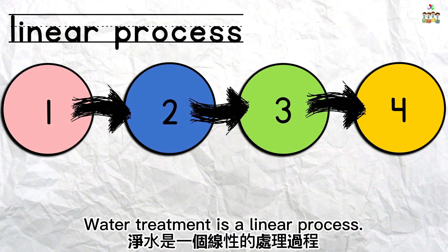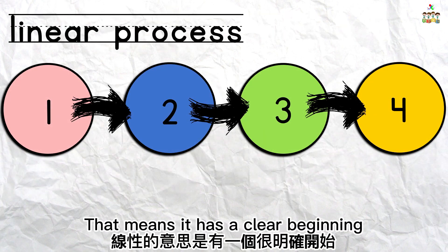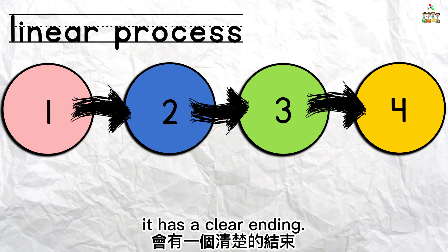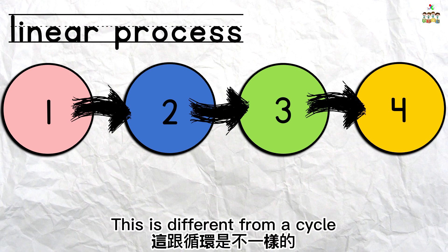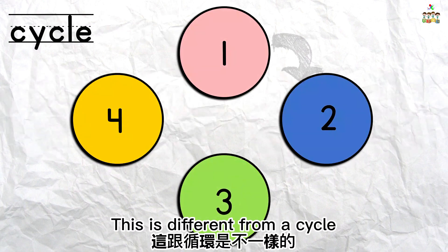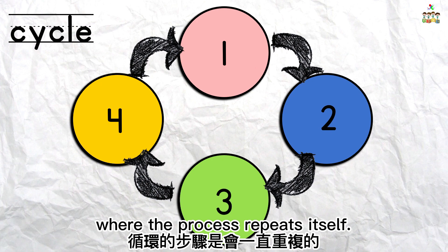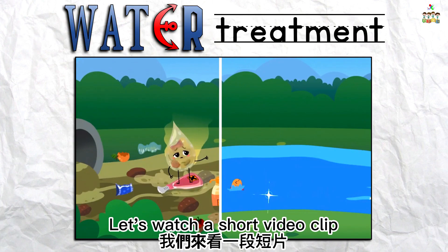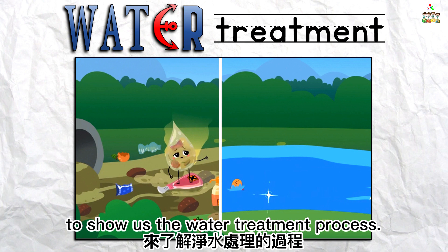Water treatment is a linear process. That means it has a clear beginning and once you go through all the stages or steps, it has a clear ending. This is different from a cycle, where the process repeats itself. Let's watch a short video clip to show us the water treatment process.